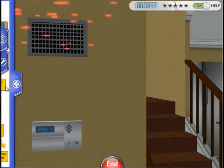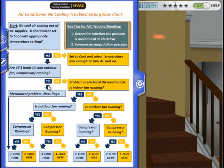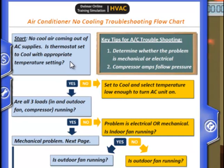Let's take a look at our troubleshooting guide to understand what the problem could be. The third tab on the left is the troubleshooting tab. We did confirm that the thermostat was set to cool with an appropriate temperature setting. The first major step in assessing an air conditioner is determining what loads are running — the indoor fan, outdoor fan, and compressor. Troubleshooting usually employs a process of elimination, which will save time and money.